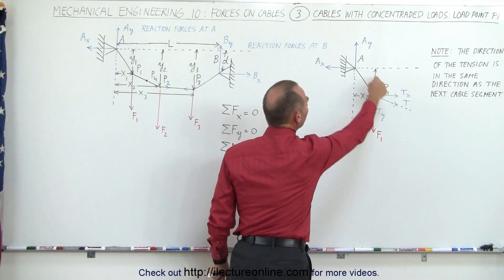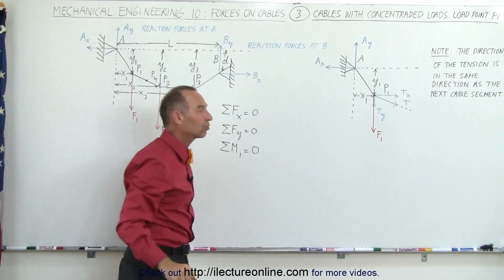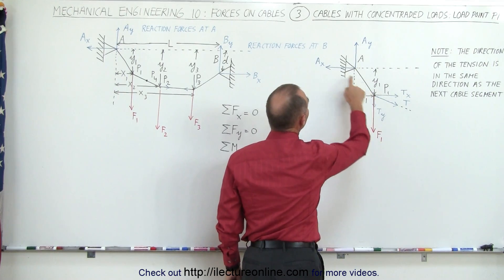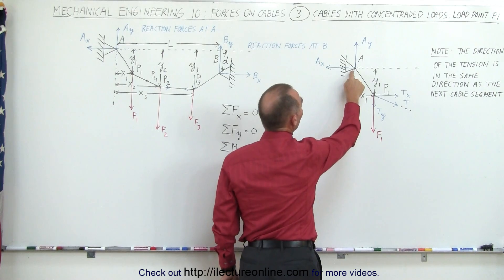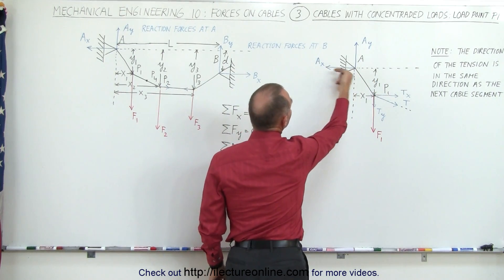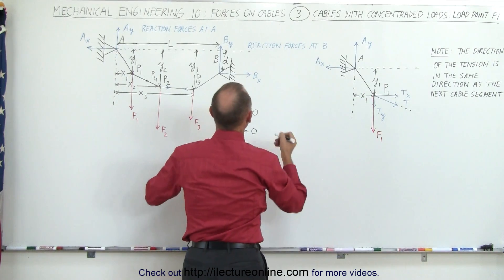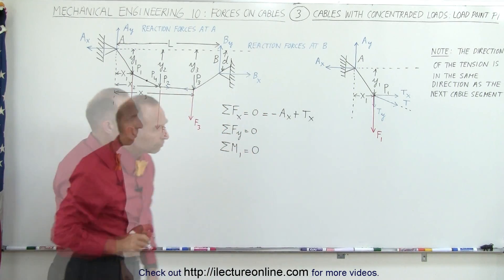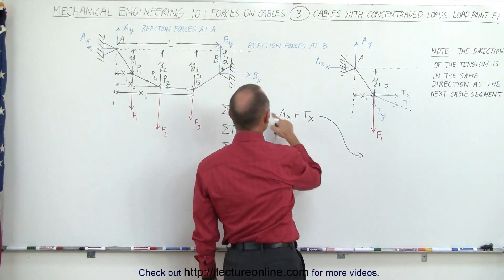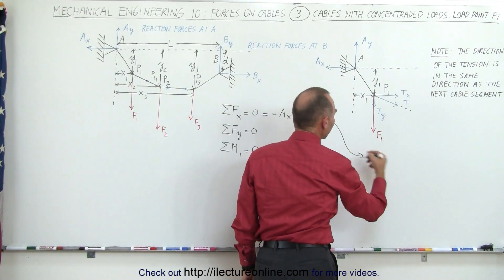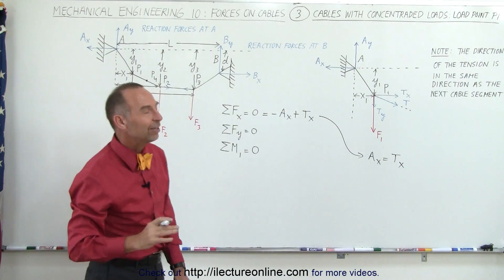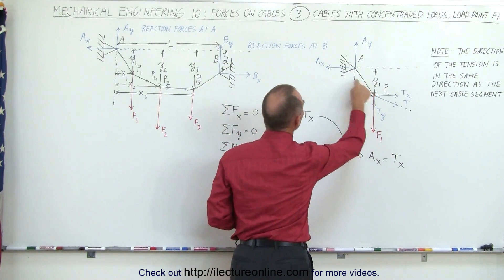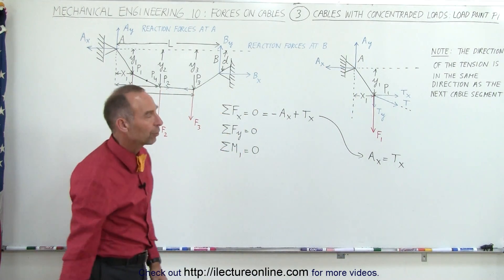Let's apply that to this particular part of the cable. First, let's add up all the forces in the X direction. The X component of the tension acting on that section of the cable and the X component of the reactionary force at support A both act on this cable. This will be in the negative direction, this in the positive direction. So we write: minus A sub X plus T sub X equals zero. From that, I can conclude that the magnitude of A sub X equals the magnitude of T sub X — the tension in the X direction equals the reactionary force component at the support point.